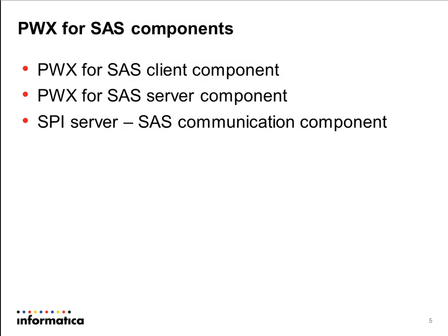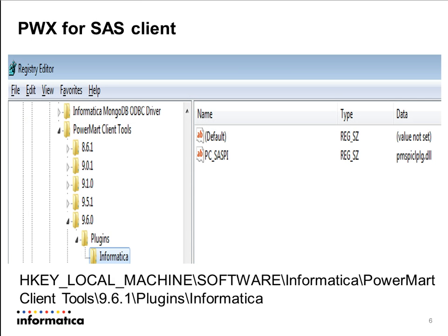What are the major components of PowerExchange for SAS? The installation includes three components: the PowerExchange for SAS client component, the PowerExchange for SAS server component, and the SPI server component, the communication component. The client component needs to be installed on the machine hosting the PowerCenter client tools like Designer, Workflow Manager, or Workflow Monitor. It is responsible for adding the 'Import from SAS' option in your Designer tool.